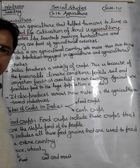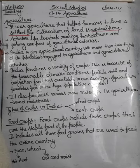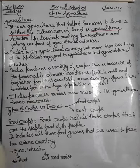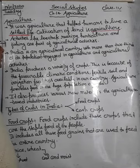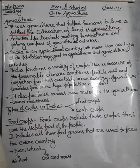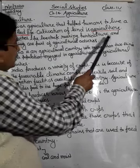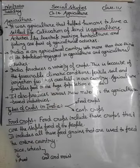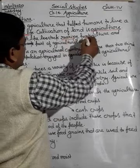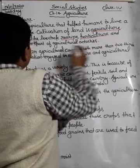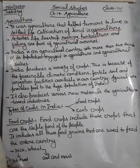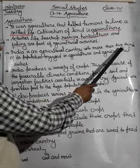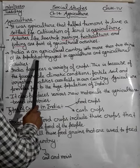Activities like livestock rearing, horticulture, and fishing are part of agricultural activities. These all fall under agricultural activities. Livestock rearing, horticulture, and fishing are the main agricultural activities we will discuss.